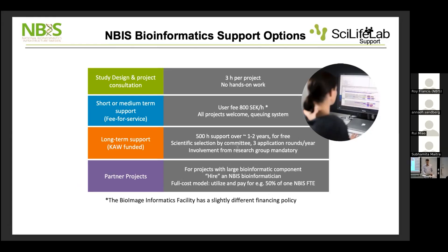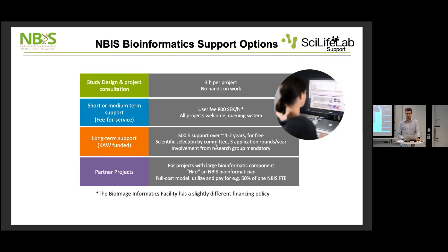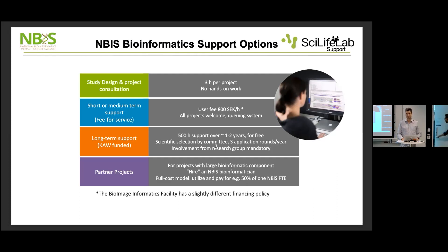Short- to medium-term support can range from a few hours to several years of part-time involvement. For the long-term support — the partner project — it's 500 hours of support, usually spread over one to two years, and it's application-based. You send in a relatively short and simple application describing your research and what kind of support you'd need from NBIS. It's free because Wallenberg is actually paying for it — it's already prepaid. Instead of receiving a grant in money, you get it in hours of bioinformatics support. An external group ranks the projects, and there are typically three application rounds per year.